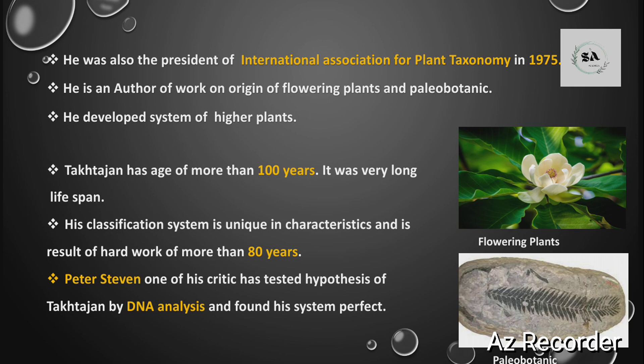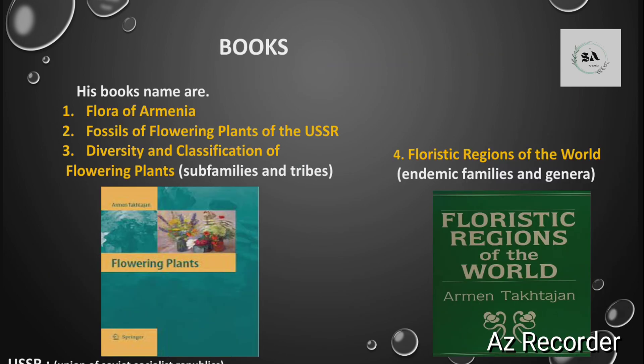Takhtajan had many critics who criticized his work. One of them was Peter Stevens. Peter Stevens tested Takhtajan's hypothesis through DNA analysis. After testing, he found Takhtajan's system of classification to be perfect.